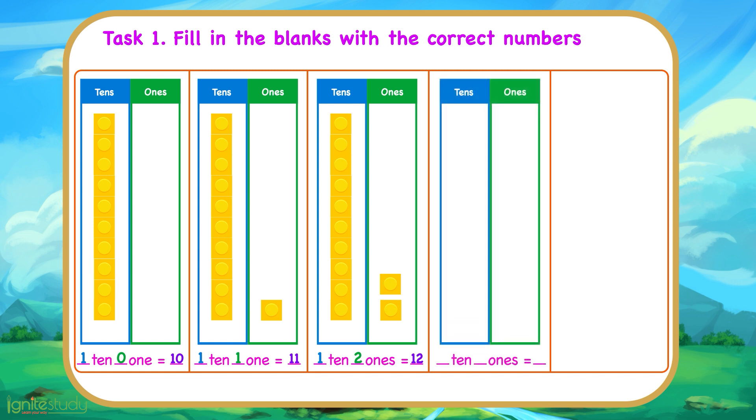Next, here, we have 1 ten and 3 ones. So, 1 ten and 3 ones is 13.